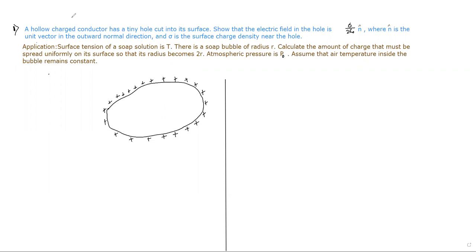For that, if we consider a Gaussian surface — basically a cylindrical Gaussian surface — electric field lines exist only in the outward direction. Electric field lines are normal to the surface.